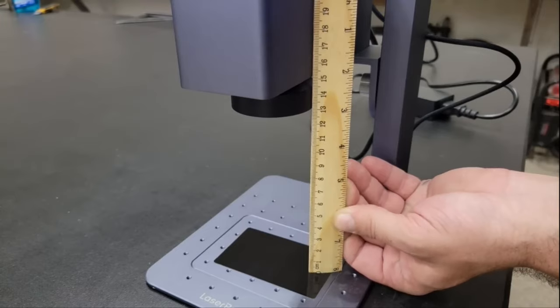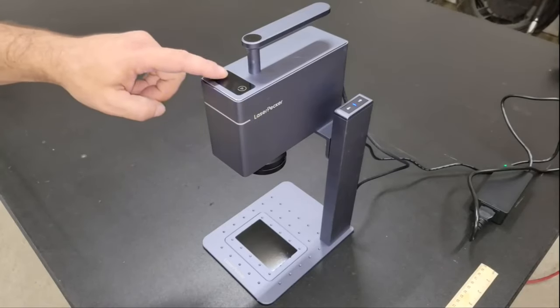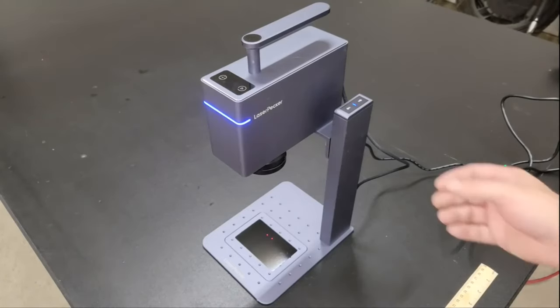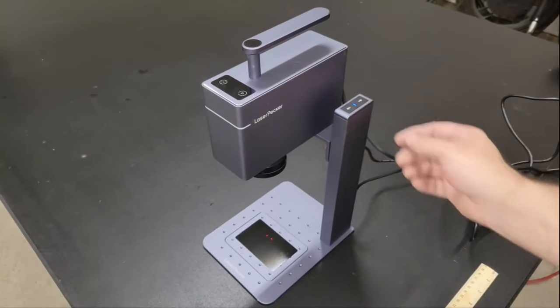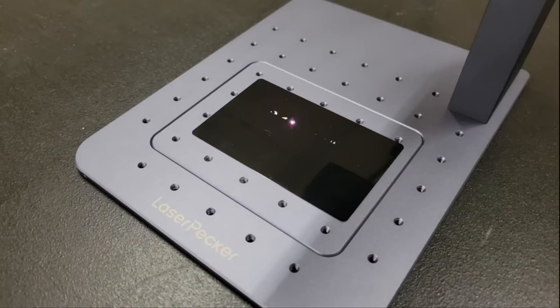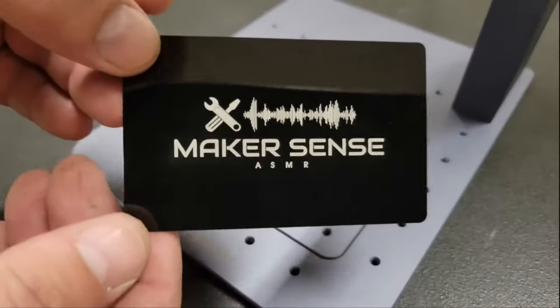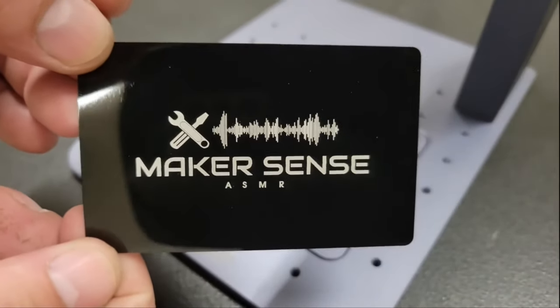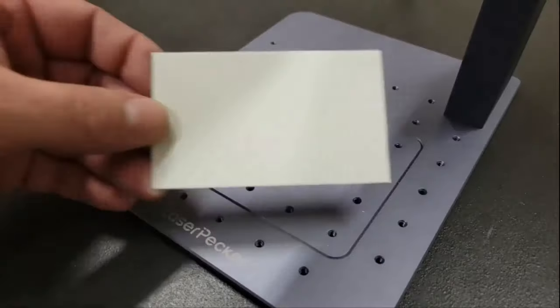Setting the focal point for the LP3 can be done two ways. The first is by using a ruler like with the LP2. The second method is by pressing the preview button on the top of the module which will cause the laser to output a blue rectangle representing your work area but also a set of two red dots which need to be combined into one by raising or lowering the module until they converge. Once that's done, the focal point is set.